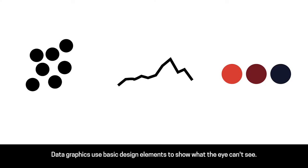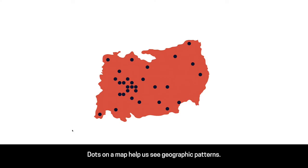Data graphics use basic design elements to show what the eye can't see. Dots on a map help us see geographic patterns.